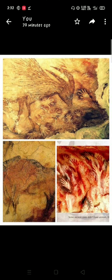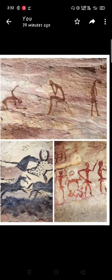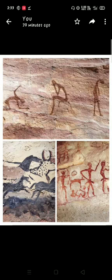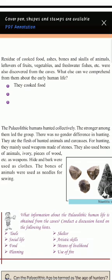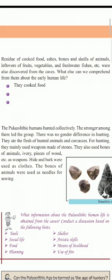The cave paintings are a source of information about early humans. Many other things were also discovered from these caves, such as residue of cooked food, ash, bones and skulls of animals, leftovers of fruits and vegetables, and freshwater fish, etc.